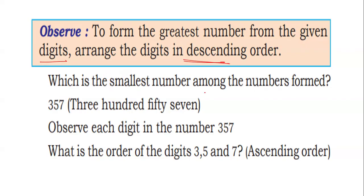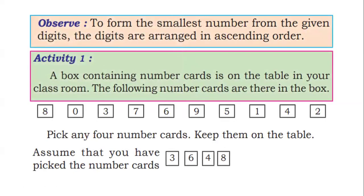To find the smallest number among the numbers formed, as shown in the above example with 357 — to form the smallest number from the given digits, arrange the digits in ascending order.